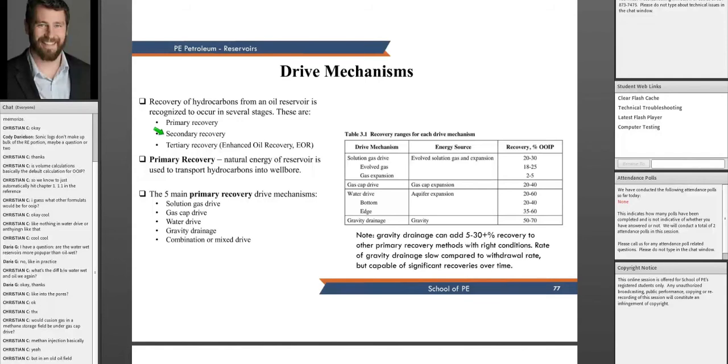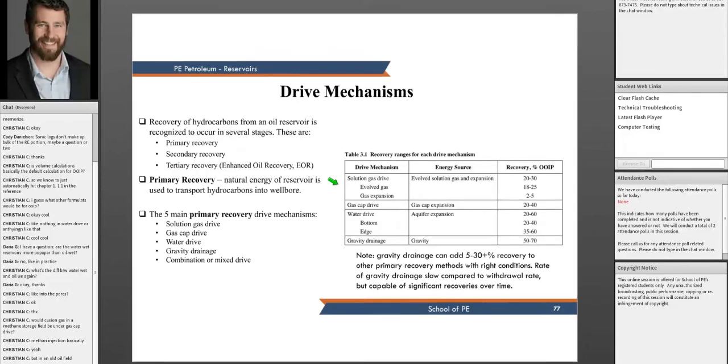Now the distinction there is: secondary recovery is—gas cap would be if you're actually in your reservoir, kind of like we talked about last night with our oil rim. So you're in an anticlinal structure and you actually have a gas—there's a contact. Let me just draw it real quick. So we have an anticline like a dome structure, so here's kind of your rock structure.